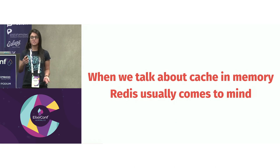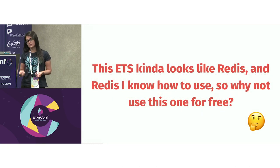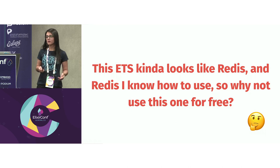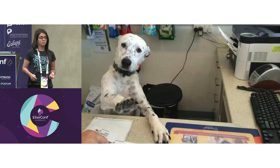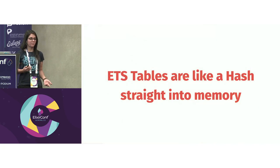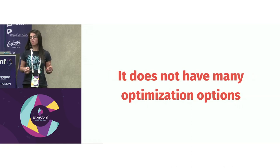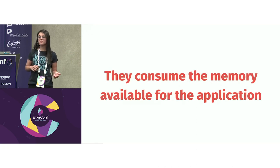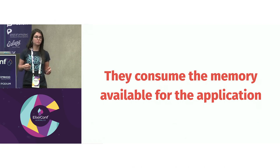When we talk about cache in memory, Redis usually comes to mind. ETS kind of looks like Redis, and Redis I know how to use. Why not use ETS? It's free in Erlang already, and I don't need to set up any external environment. But not so fast — ETS tables are like a hash stored straight into memory. They don't have many optimization options if you need to compress the data, and they also consume the memory available for your application. So if your application is doing important work and needs memory, ETS will use it. You need to be careful with this, and it doesn't offer support for distribution either.